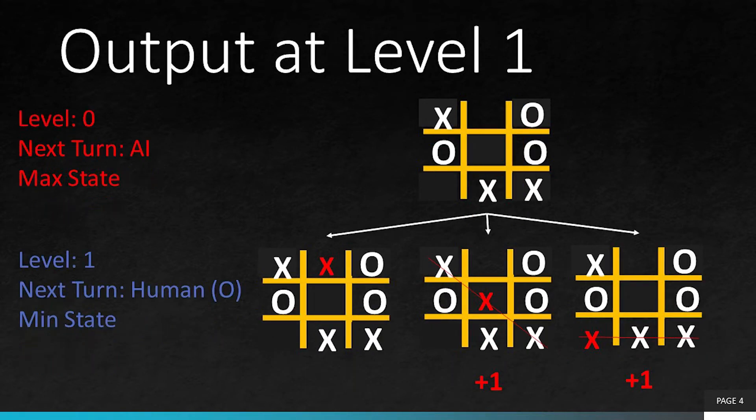Let's look at the output at level 1. We have two states that will make the AI win and if this is the move that AI will make, the score assigned to it will be plus 1. As these two are terminal states, they will not have any more child states under them.